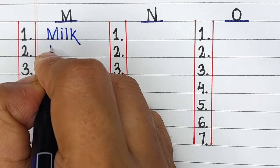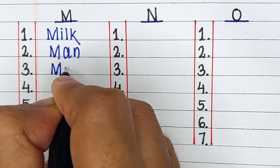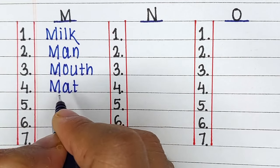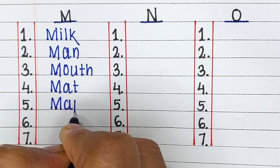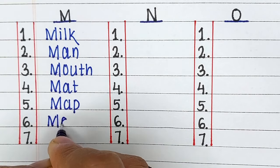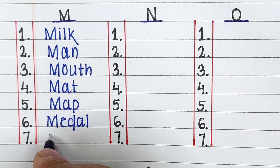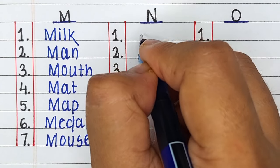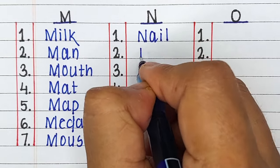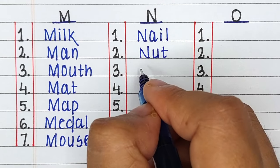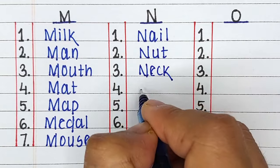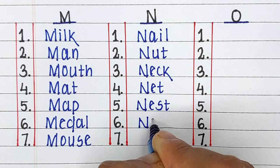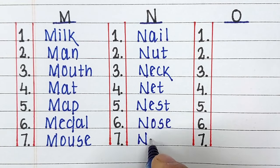Next is Alphabet M. The words starting from letter M are Milk, Man, Mouth, Mat, Map, Medal and Mouse. Next up we have Alphabet N. The words are Nail, Nut, Neck, Net, Nest, Nose and Nurse.